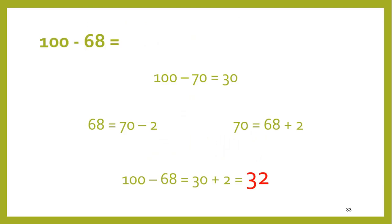100 minus 68: we could use the strategy of taking away 70. 68 is almost 70 — that gives you 30, but we took two too many away, so the correct answer is 32; we add two on to compensate.